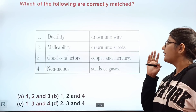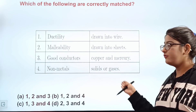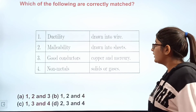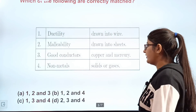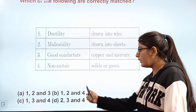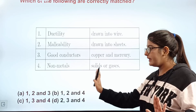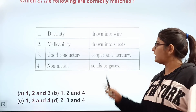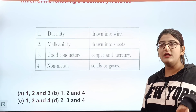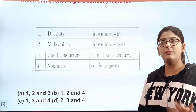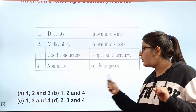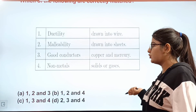Question number twelve: which of the following is correctly matched? Matching 1) ductility — drawn into wire; 2) malleability — drawn into sheets; 3) good conductors — copper and mercury; 4) non-metals — solid or gases. Matchings 1 and 2 are correct. For matching 3, copper is a good conductor but mercury is not a good conductor of heat and electricity. So matchings 1, 2, and 4 are correct. The correct answer is B.